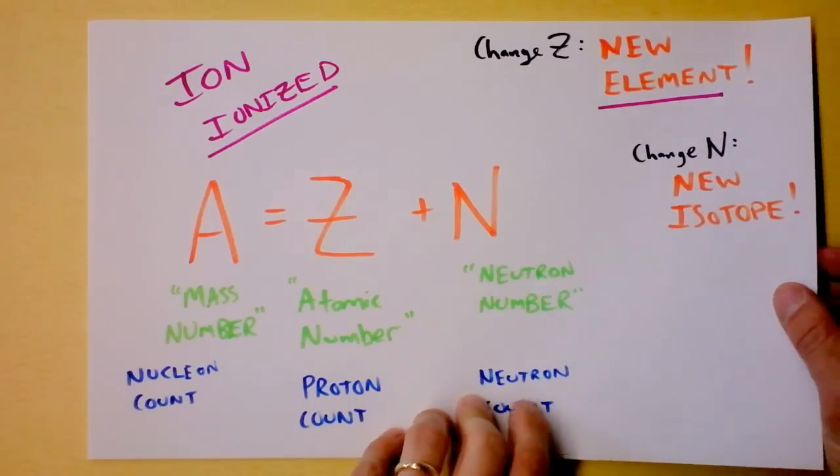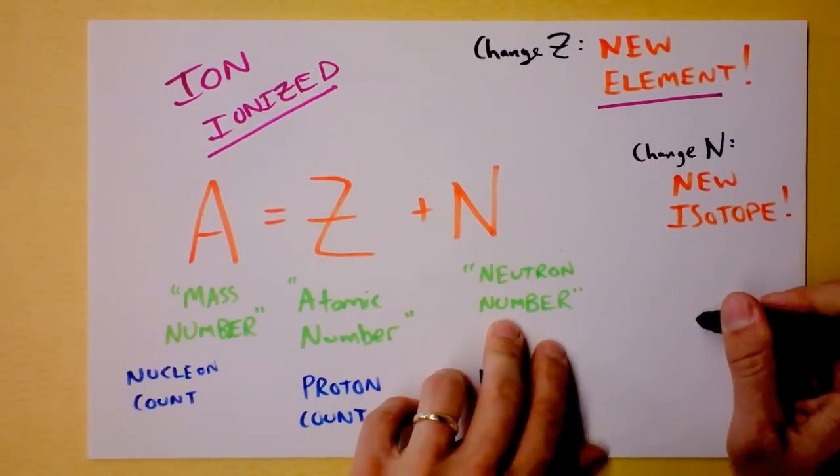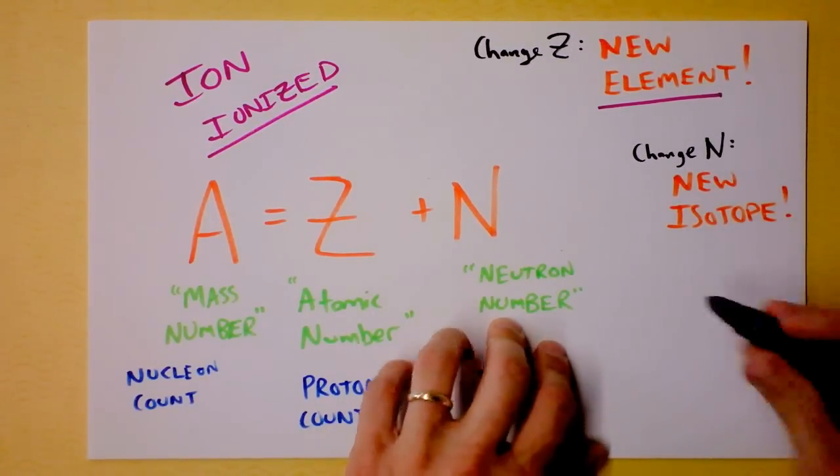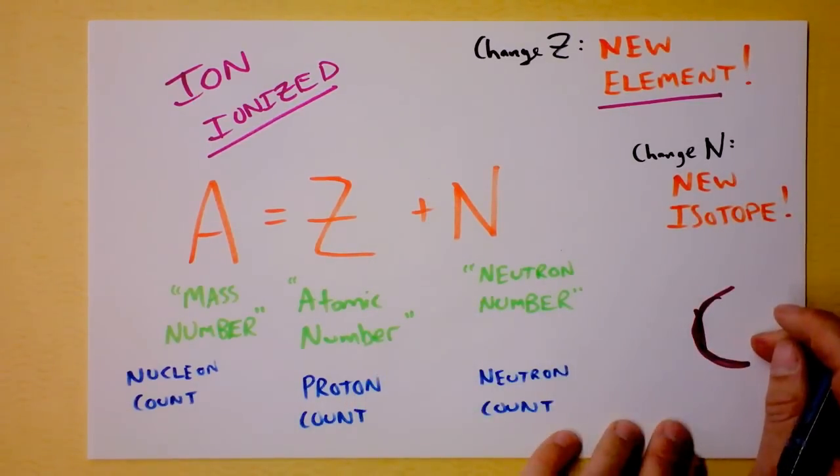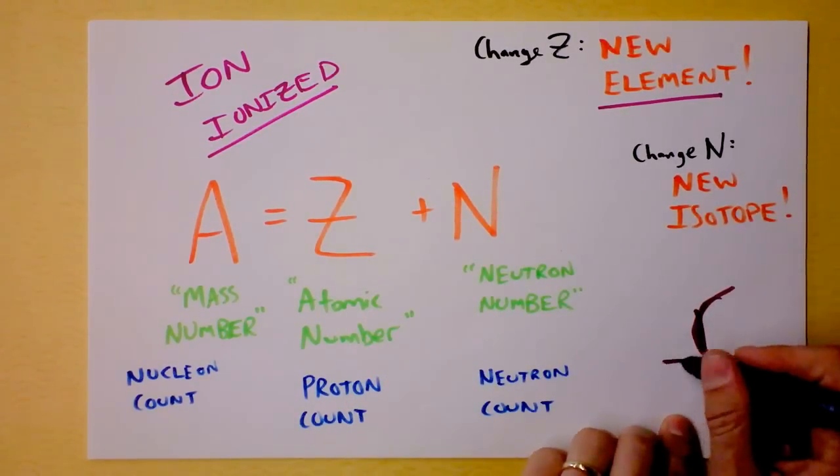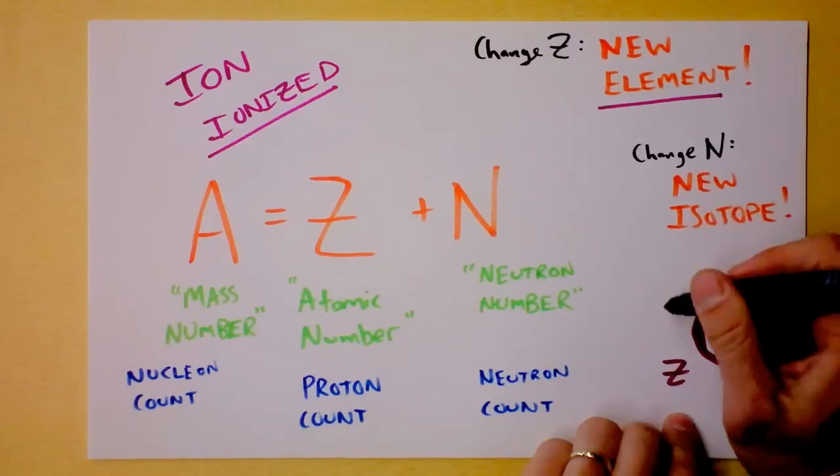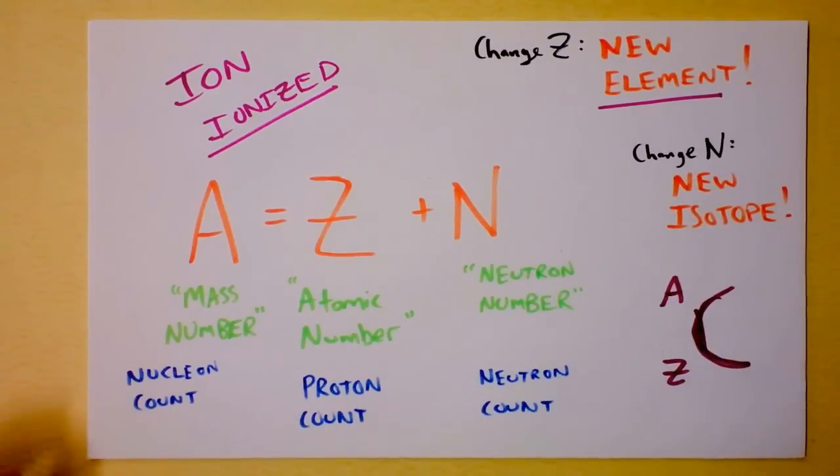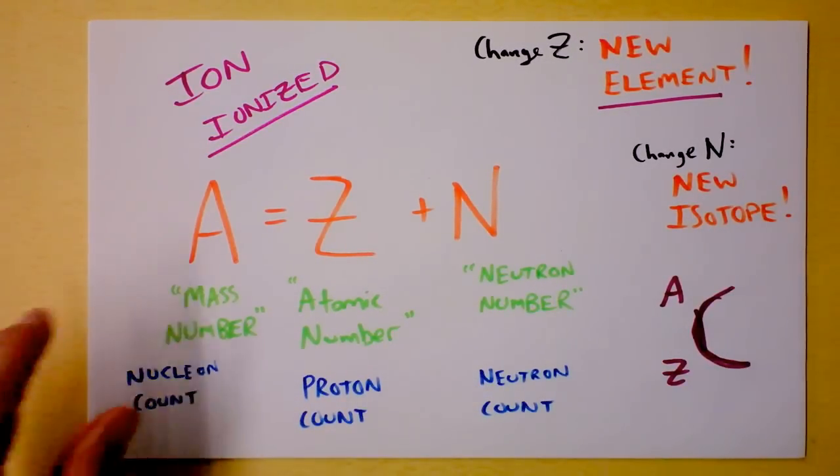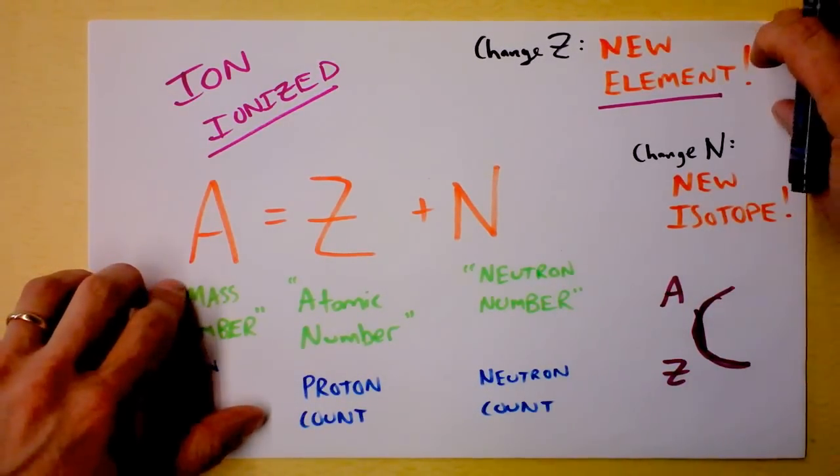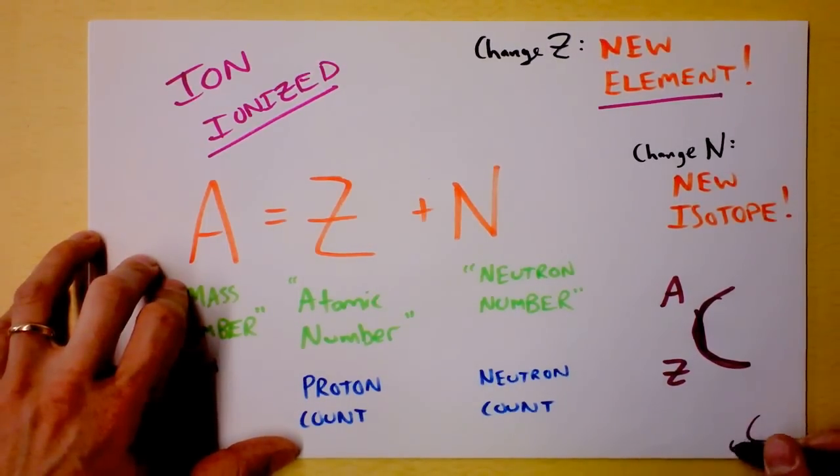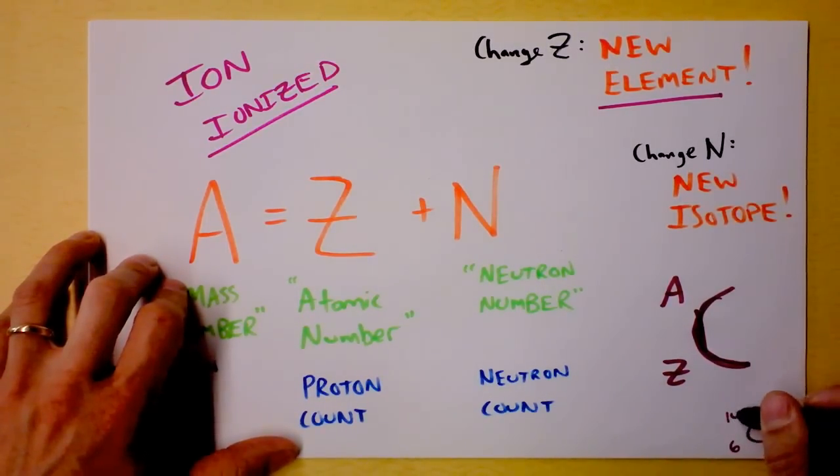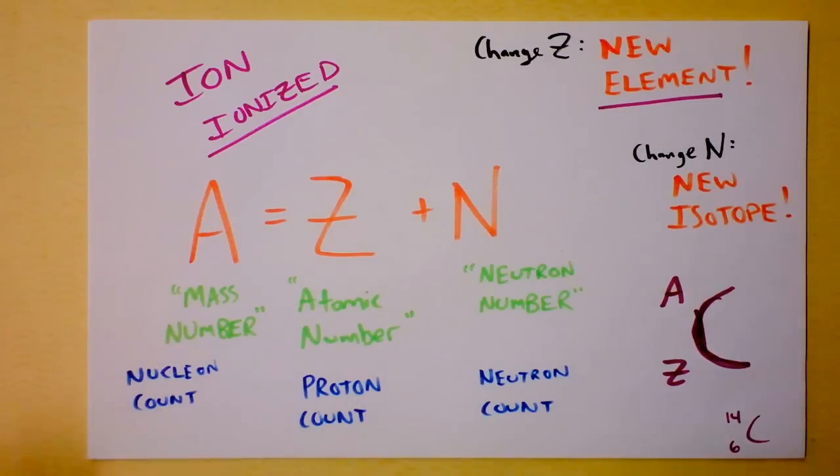And so I'll make you this little thing here. If I have some atom, let's say I've got carbon, I should probably write a C here. If I've got carbon, then I'll write its symbol right there, and what I put down here is Z, and what I put up here is A. How am I going to get N? That's your problem, not mine. So in the case of carbon-14, we could write carbon has 6 protons and it has 14 nucleons. Let's keep going.